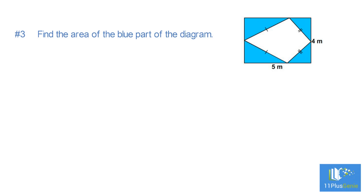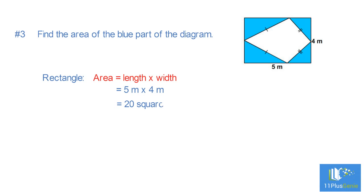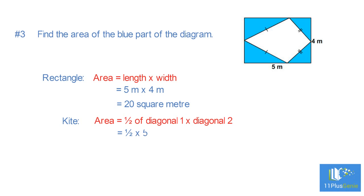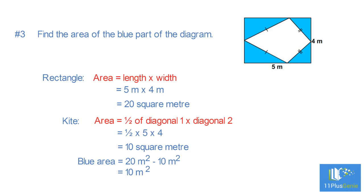Example 3: Find the area of the blue part of the diagram. We need to find the area of the rectangle: area equals length times width equals 5 metres times 4 metres, which equals 20 square metres. We find the area of the kite: area equals half of D₁ times D₂ equals half of 5 times 4, which equals 10 square metres. Blue area equals 20 m² minus 10 m² equals 10 square metres.